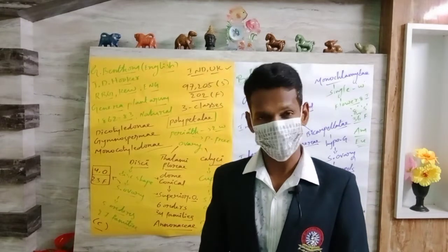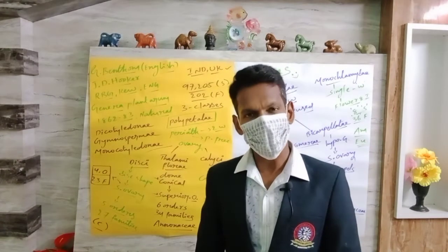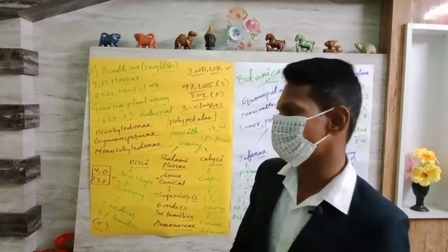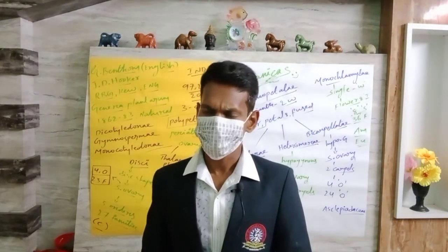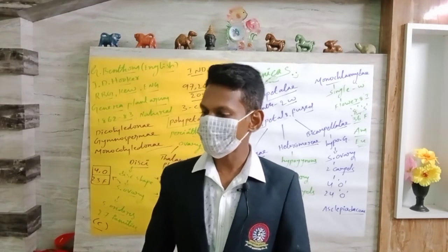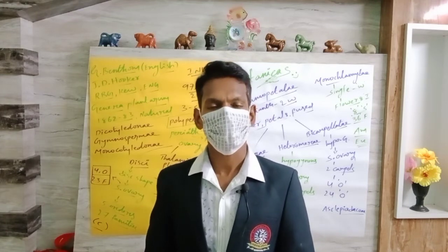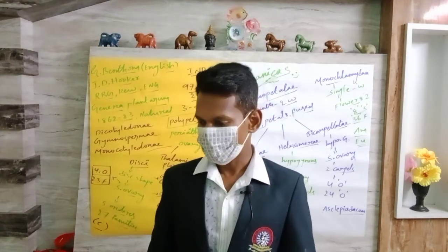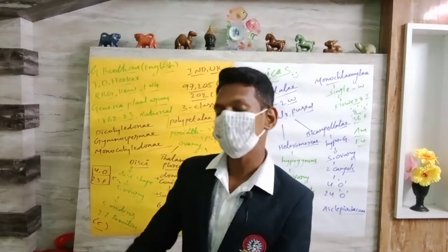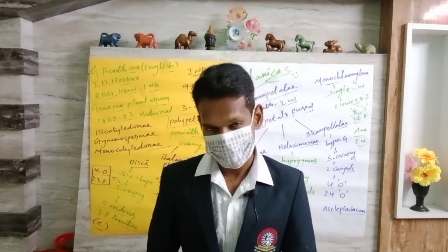Under the Plantae, we have phanerogams (flowering plants) and cryptogams (non-flowering plants). These phanerogams are again broadly categorized, and phanerogams are further classified under dicotyledonous and monocotyledonous plants, each with different categories, series, classes, and subclasses.